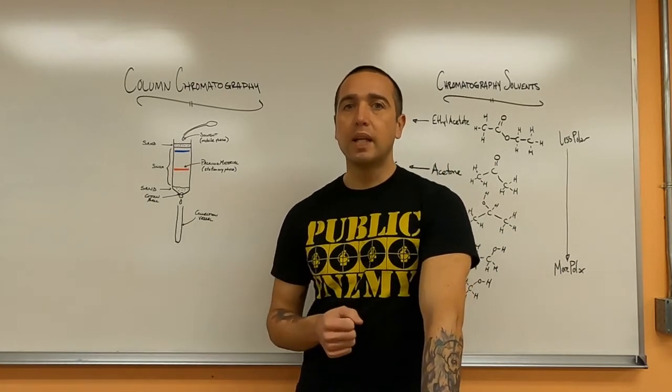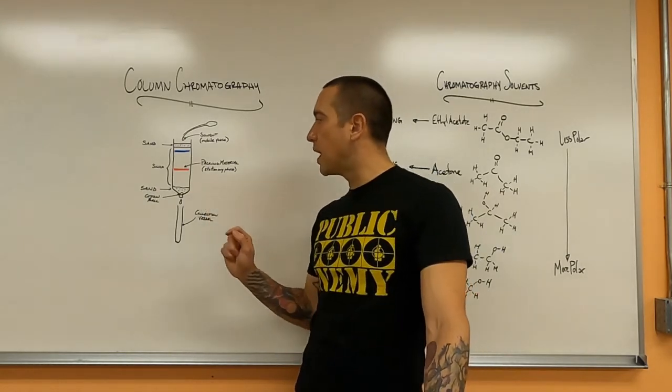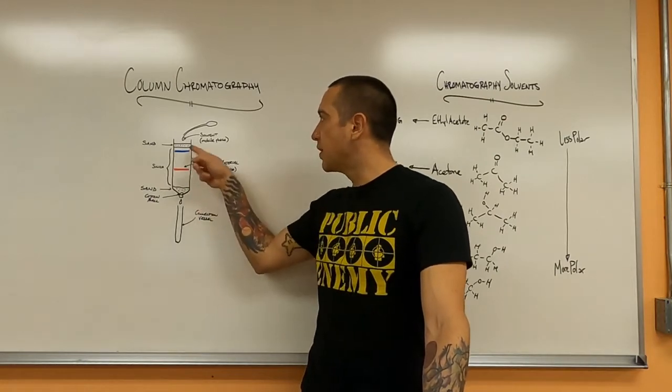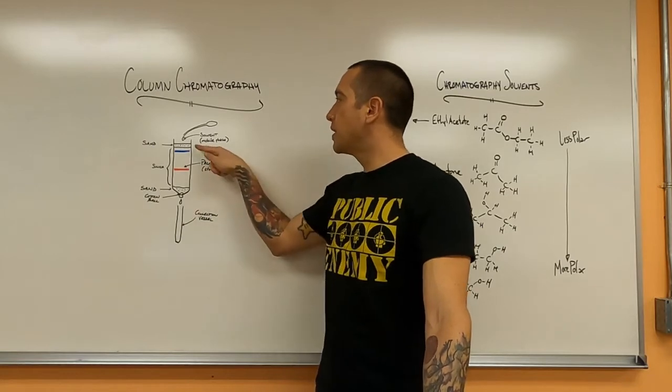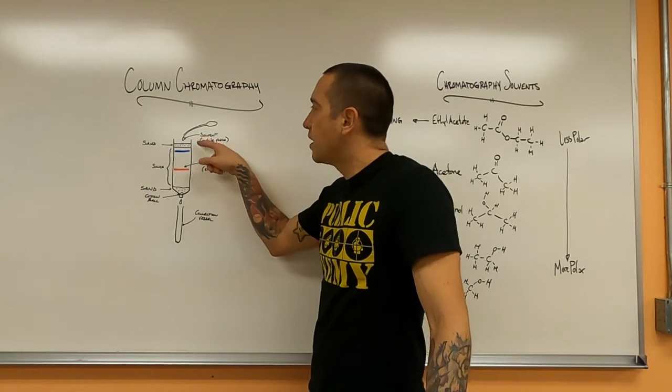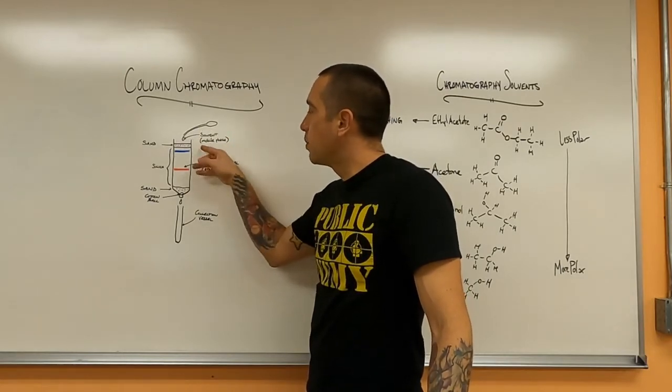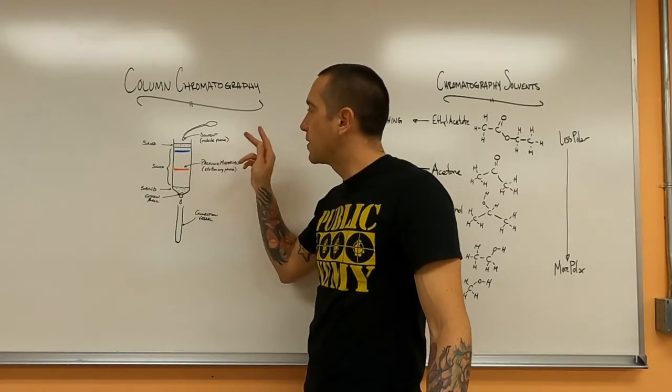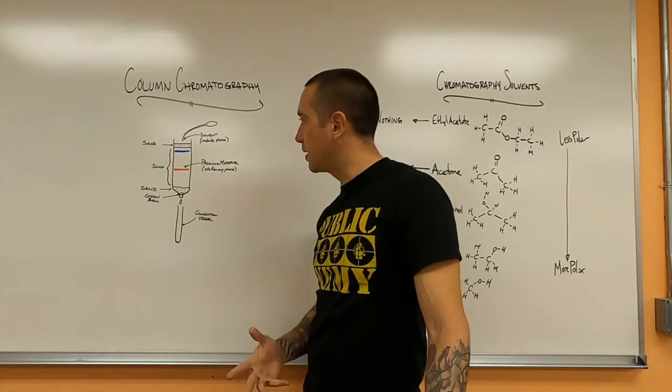The way you set up the column is at the bottom of the container, you first put a small piece of cotton and then a small layer of sand. You put your packing material and then a top layer of sand. You use a dropper and put your sample in the top. As you add solvent, the mixture will be carried down, but the different components will be carried down at different rates similar to paper chromatography, and you can collect them separately in a collection vessel at the bottom.